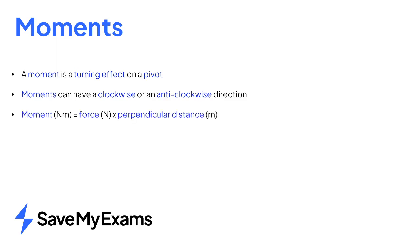In summary, a moment is defined by a turning effect on a pivot. Moments can have a clockwise or an anticlockwise direction. The equation used to calculate a moment is moment equals force times perpendicular distance.